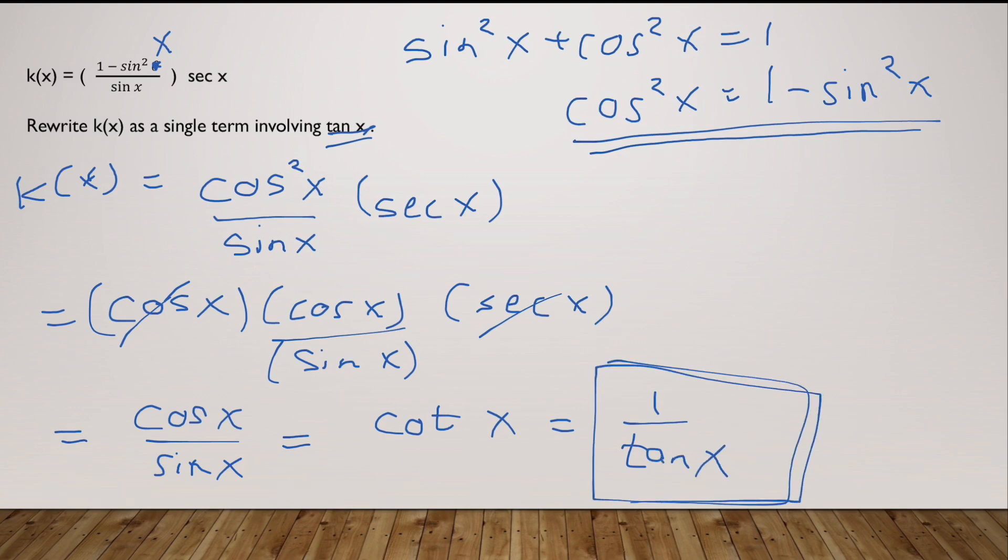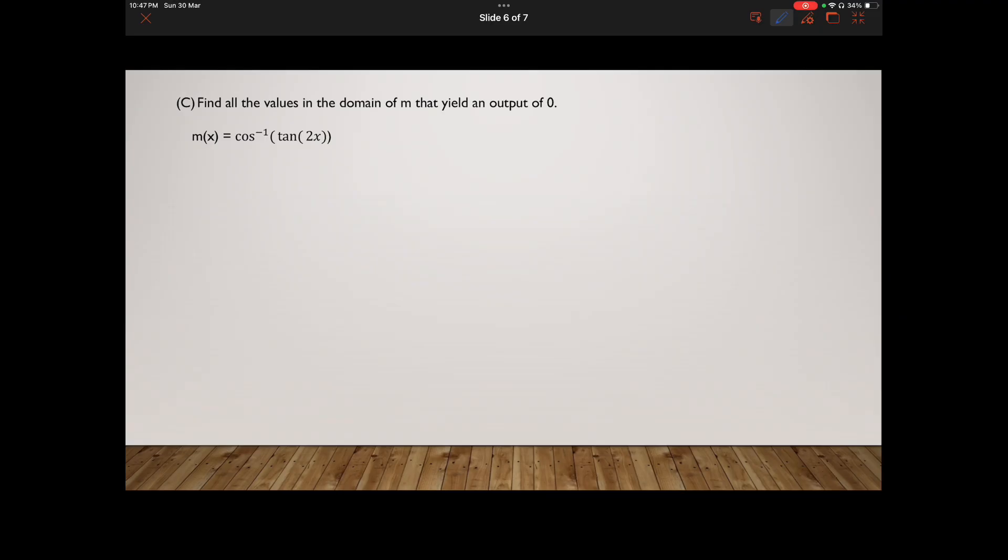Welcome to the last part of the last FRQ and it will give pleasure to one and all. It says find all the values in the domain of m that yield an output of 0. You have the function, quickly put in m(x) equals 0. You have 0 equals cos inverse of tan of 2x. Now since we have a cos inverse, this will be cos 0 which equals tan of 2x. Now we know cos 0 is just 1, so 1 equals tan of 2x.